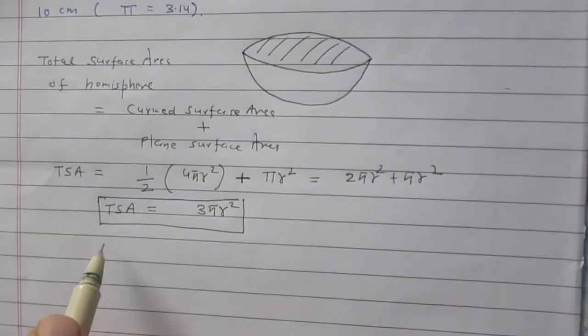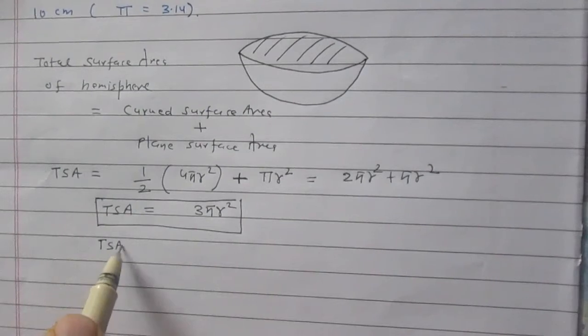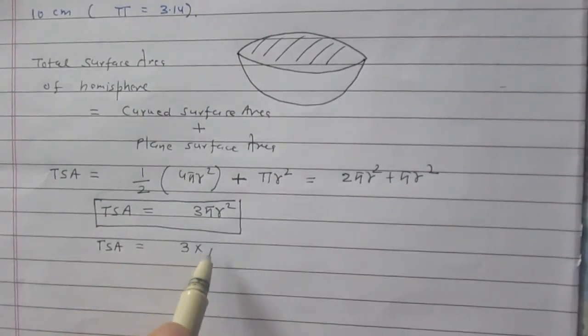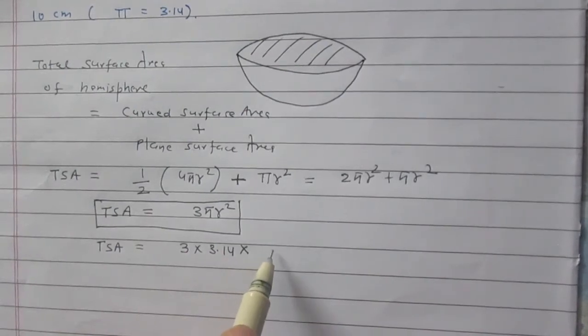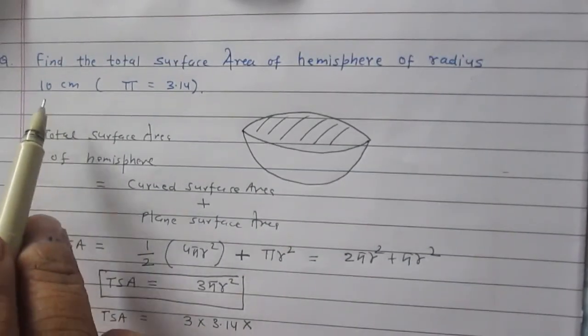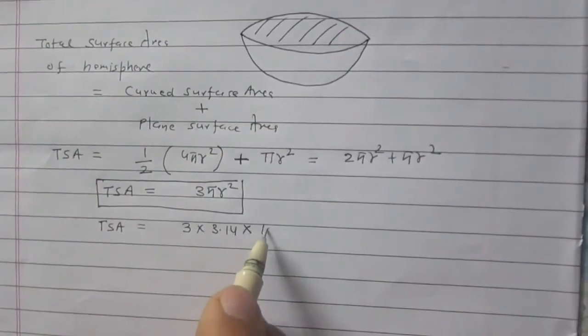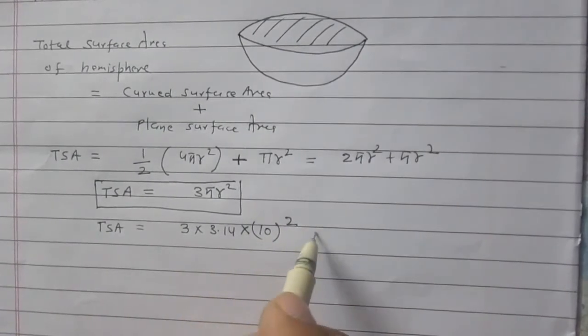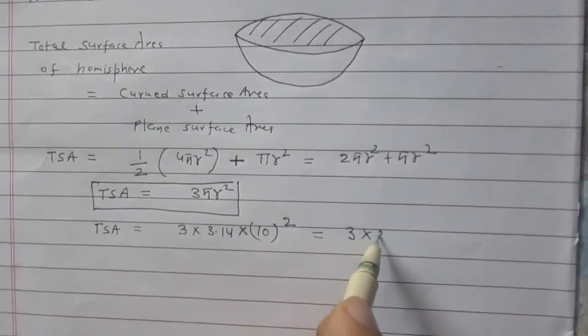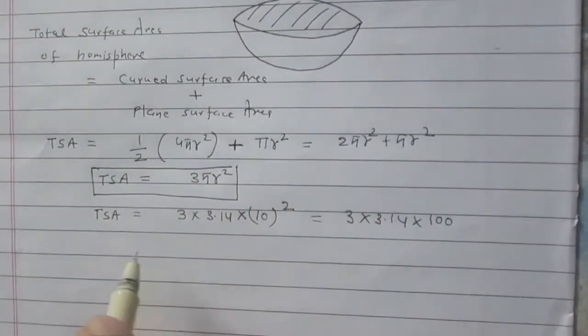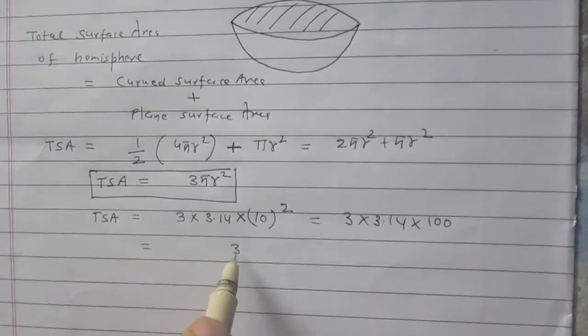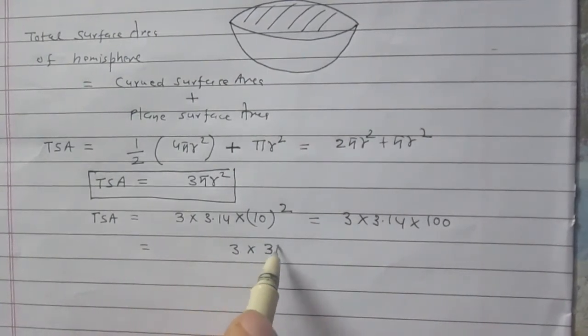Using these relations, we will get total surface area of the hemisphere is 3 × 3.14 × radius². So, it is 3 × 3.14 × 100. So, it is 3 × 3.14.